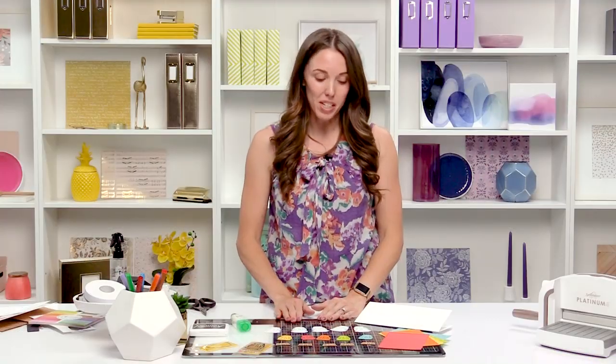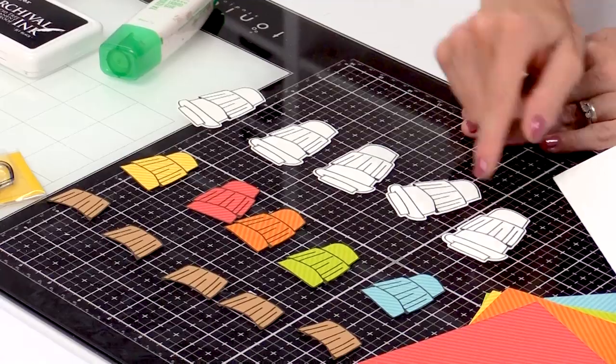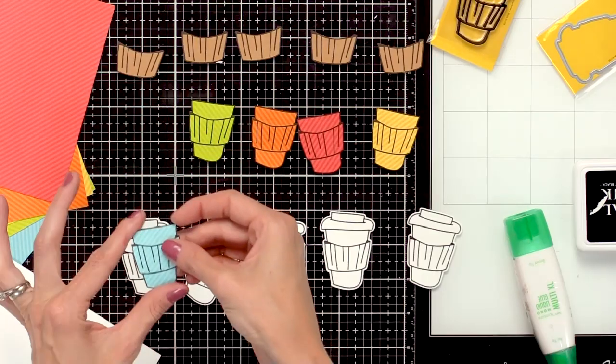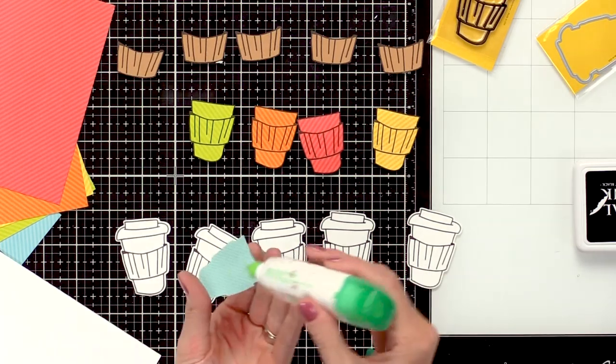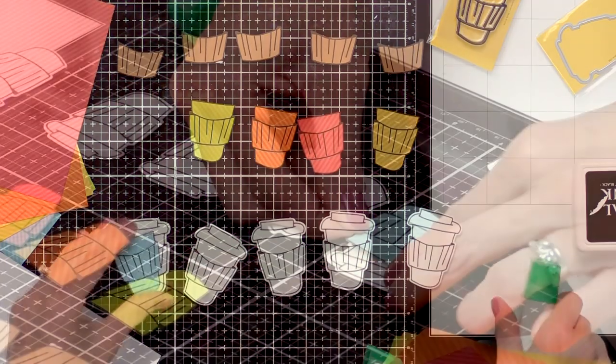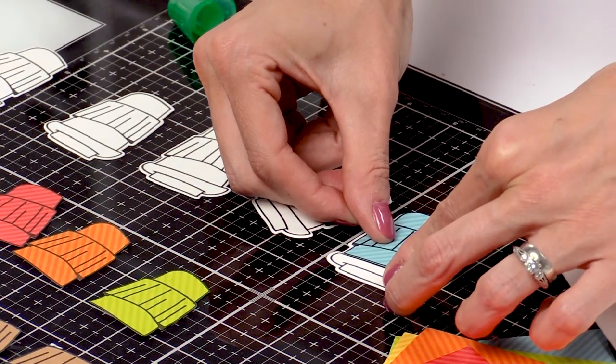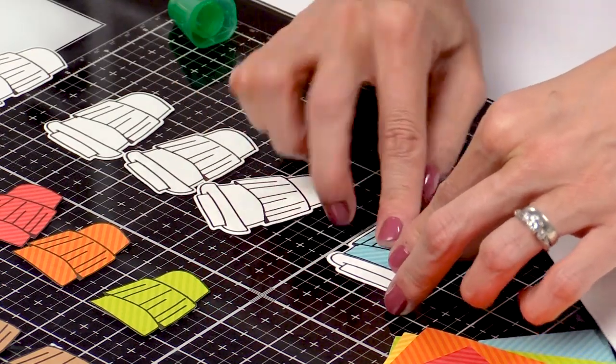Now we're ready to put our coffee cups together. We're going to start with our white coffee cup, grab one of the colored cardstock, add some glue to the back and then match it right up with the stamped image on the white coffee cup.